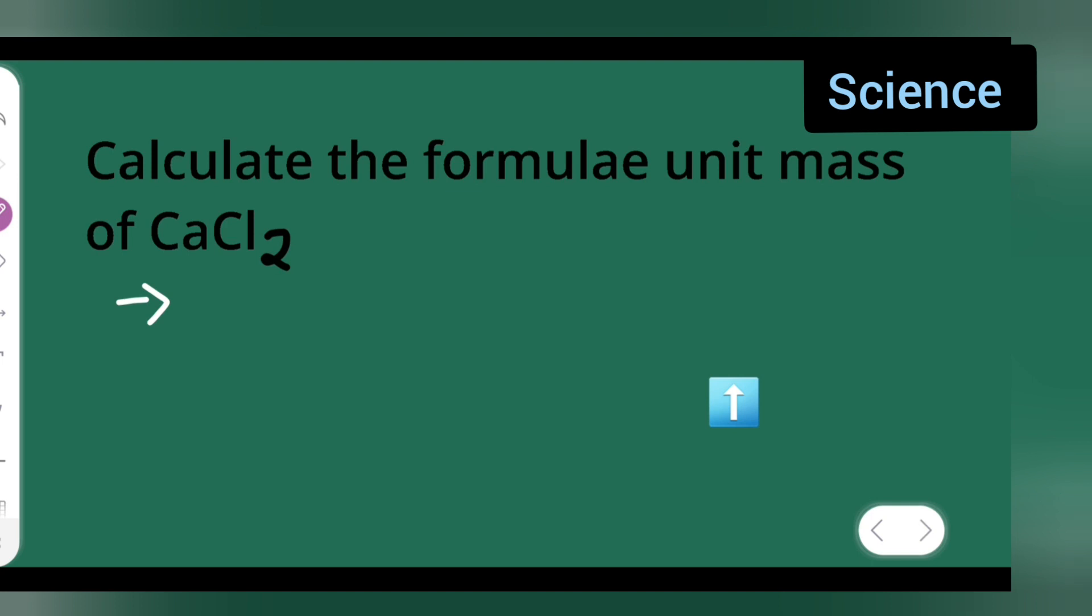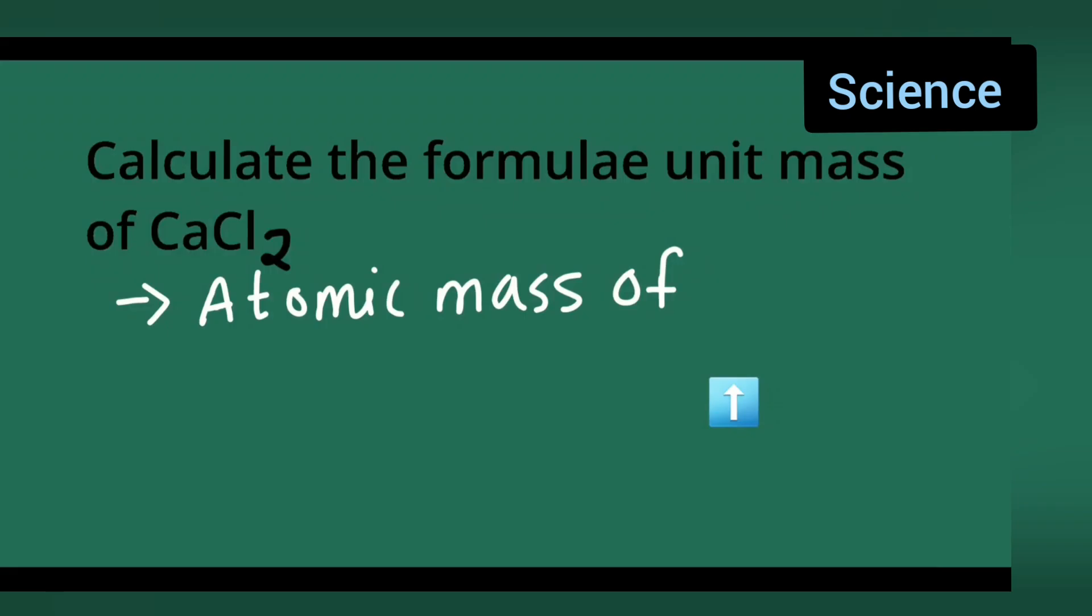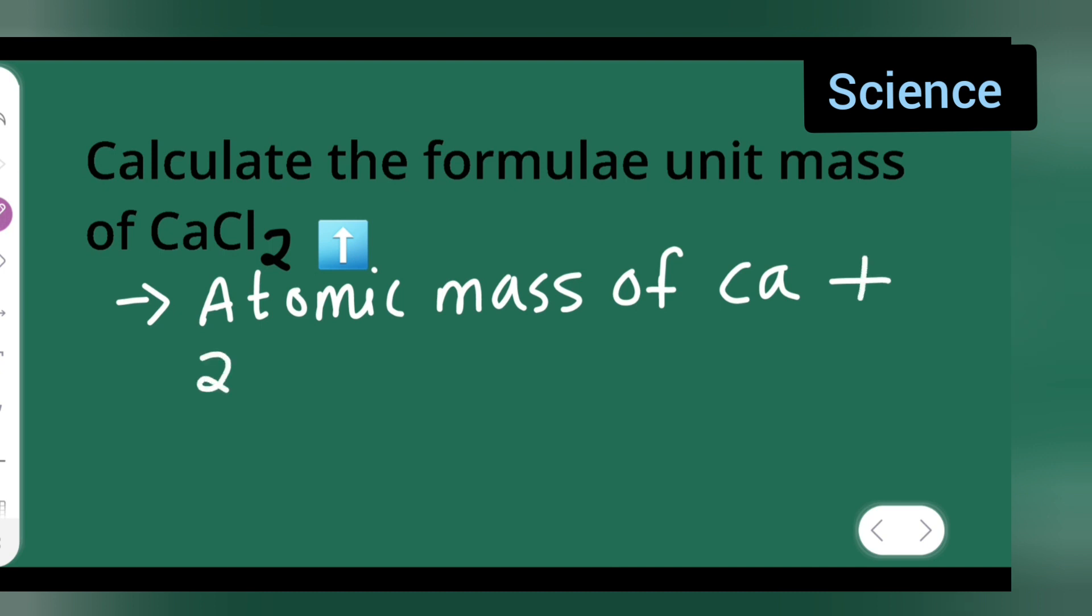So let's calculate the formula unit mass of CaCl2. First, write down the atomic mass of Ca. So what you'll have to do is first write down the atomic mass of Ca plus twice the atomic mass of Cl.